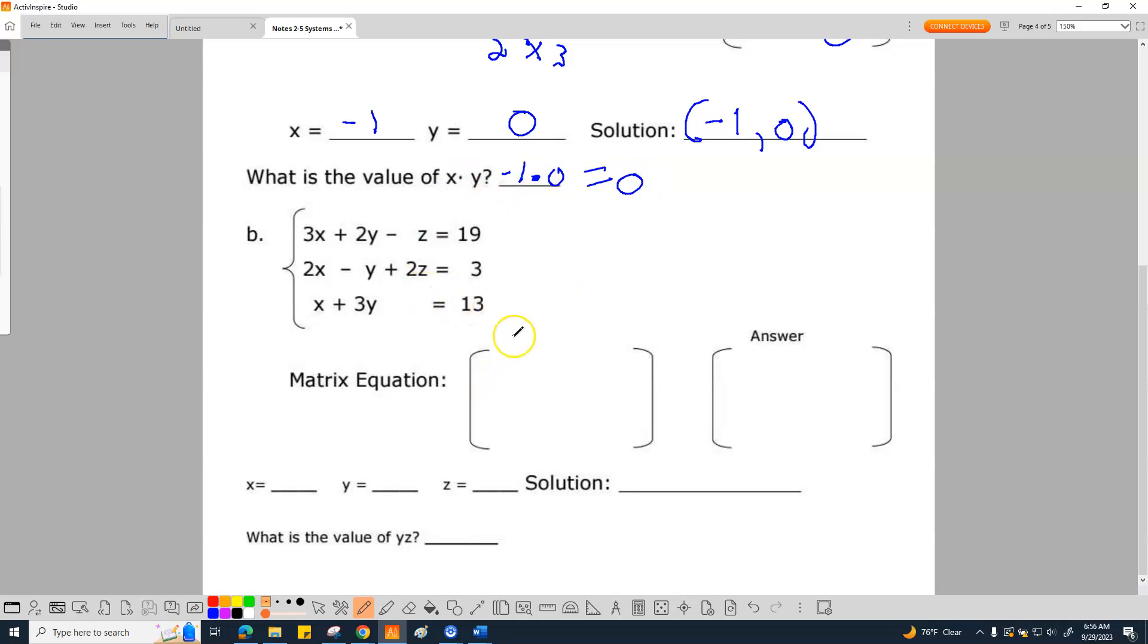Here we go. Check it out. I'm going to write this as quick as I can. So we have 3. We have 2. We have 1. We have 2. We have negative 1. We have 3. We have negative 1. We have 2. Oh, my God, mister. There's no z. It's broken. I don't know how to do this. I quit. Y'all, if it's not there, it's a 0. Not there in math basically always means a 0. 19, 3, 13.